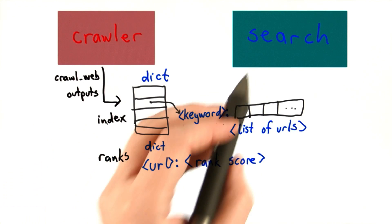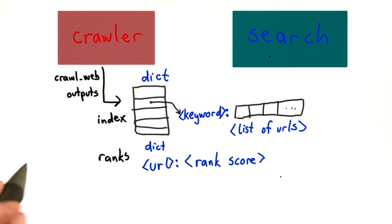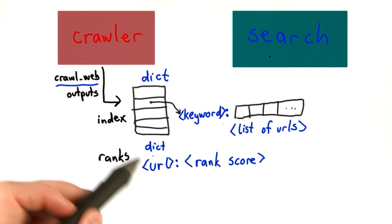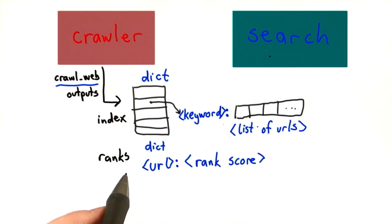The way search depends on how the index and ranks are represented is through the outputs. So the crawl web procedure outputs two things: an index and a ranks list. Both of those are represented as dictionaries. The index maps a keyword to a list of URLs, and the ranks maps a URL to its rank score.